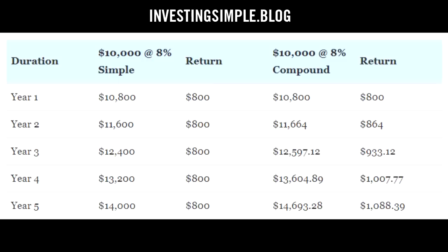Let me give you an example using numbers. If you invested $10,000 and you were earning 8% per year of simple interest, you would earn $800 in interest every single year. Year one would be $800. Year five would be $800. Year 23 would be $800. Every single year you're earning the same amount of interest, and over 25 years your account would grow from $10,000 to $30,000.